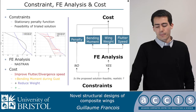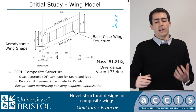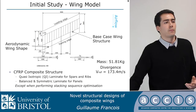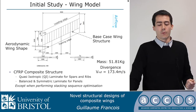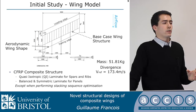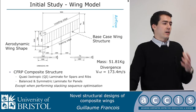Moving on to the initial study: it was performed on a forward swept wing. The reason is that forward swept wings can be heavily constrained by divergence speed, so it is interesting to see if we could remove this constraint. In this case, the aerodynamic wing shape does not change — we only change the shape of the underlying structure, which is made of carbon fiber reinforced plastic.